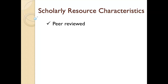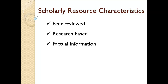Second, a scholarly resource that is reporting the findings of a research study will have abided by academic guidelines for conducting research. These resources will openly disclose the methods used to conduct the research and analyze the study findings. Third, scholarly resources are based upon factual information. Any conjecture or assumptions are clearly disclosed as such, and the use of these is very limited.